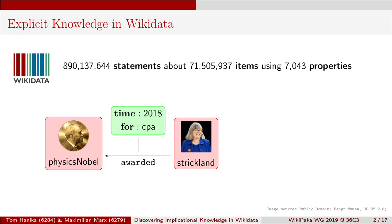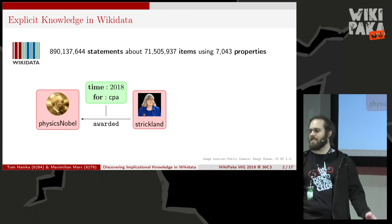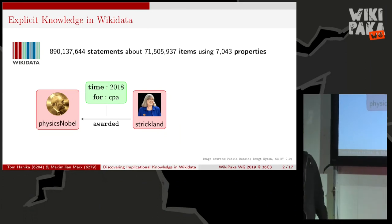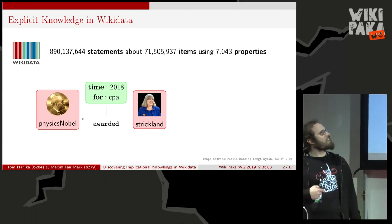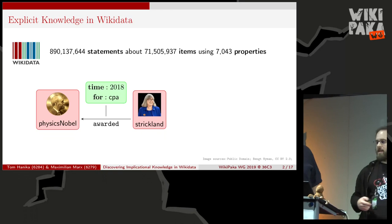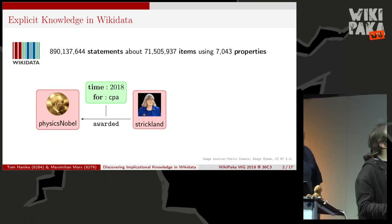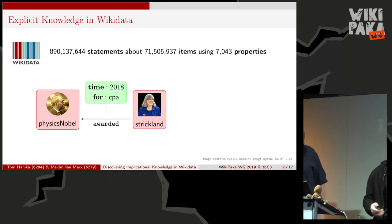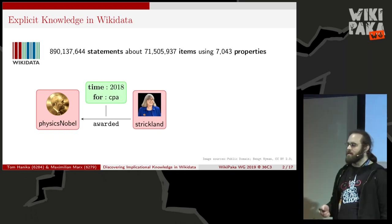For example, we have Donna Strickland here, and we encode that she received a Nobel Prize in Physics last year via the property 'awarded,' with a qualifier: time 2018, and also for pulse amplification. All in all, we have some 890 million statements on Wikidata that connect 71 million items using 7,000 properties.